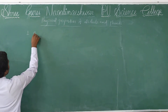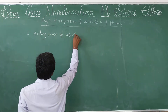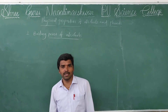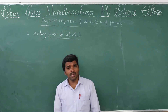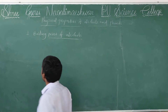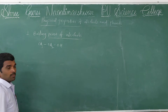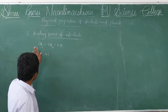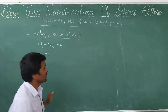Let us discuss about the boiling point of alcohols. Just remember here: alcohols' boiling point is higher than equal molar mass of ether. This point is very very important. For example, here I am taking ethanol — its molar mass is 46. You know that ethanol exhibits functional isomerism with ethers.